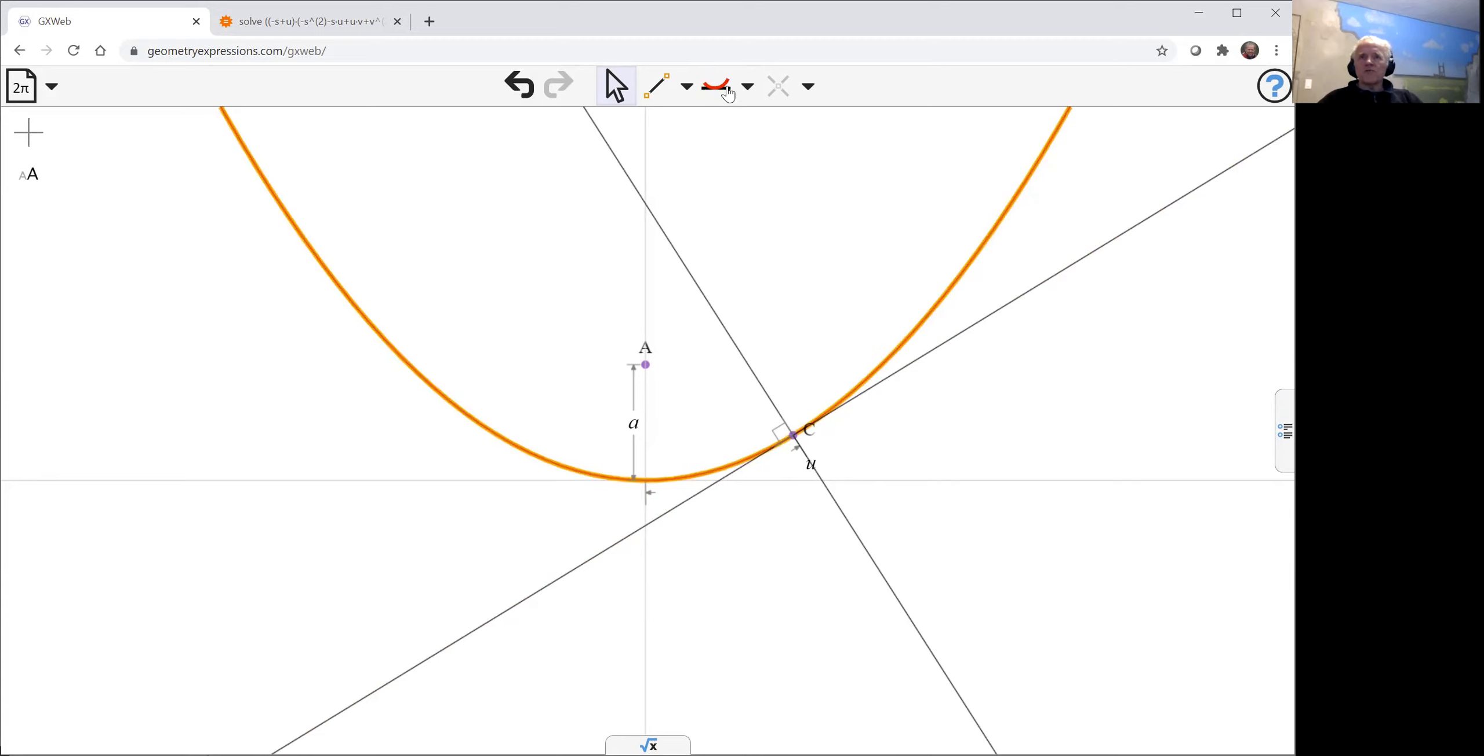Let's create another normal. Make that location v on the curve. And we will get the normal there by using the perpendicular tool again. Now we can intersect those two. And so here's two normals meeting in a point.